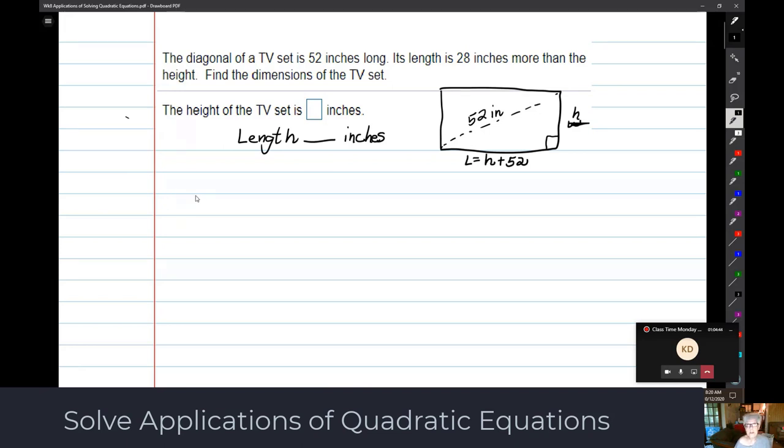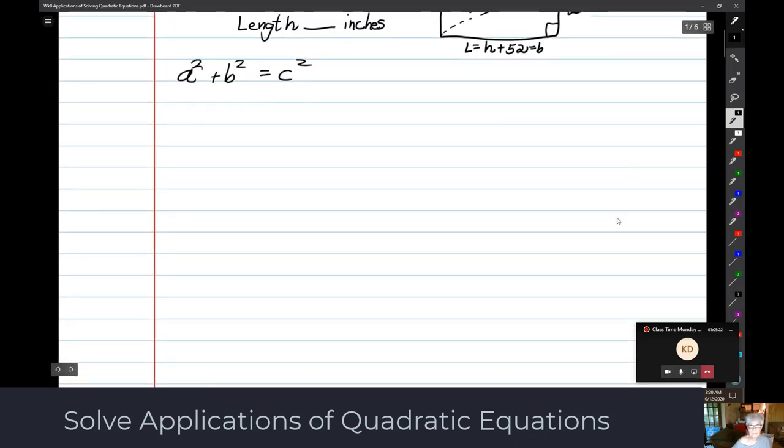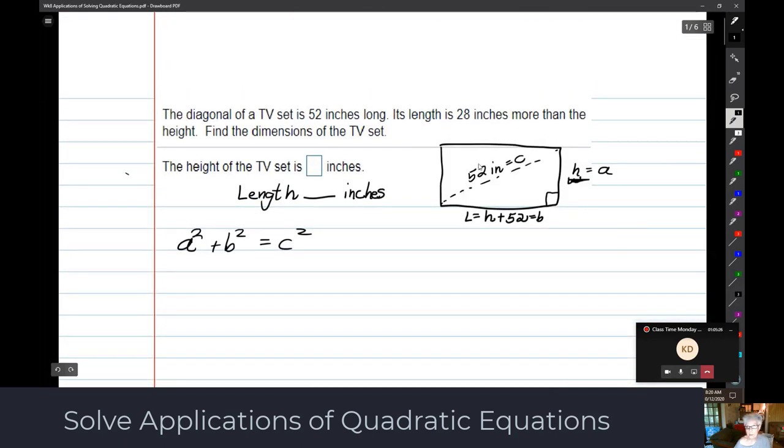Notice that this makes a right triangle. So let us use the Pythagorean theorem as long as we're looking for the length of sides. So a squared plus b squared equals c squared. The vertical side is usually a, the horizontal side is usually b, and the hypotenuse is absolutely always c.